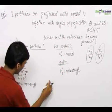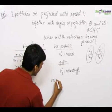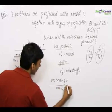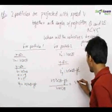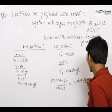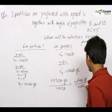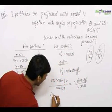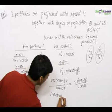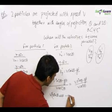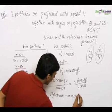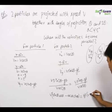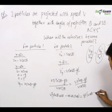So for doing that, we write here v sin 2 theta minus gt upon v cos 2 theta is equal to v sin theta minus gt upon v cos theta. Now we cross multiply and solve to get v square sin 2 theta cos theta minus cos 2 theta sin theta is equal to gt upon v cos theta minus cos 2 theta.